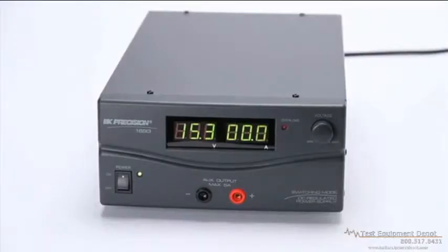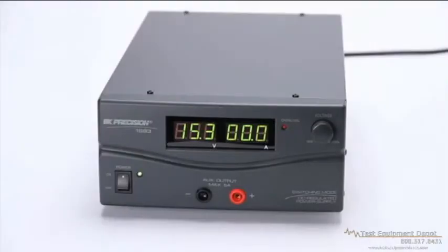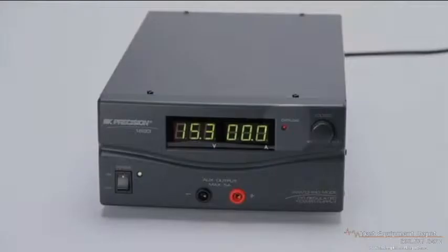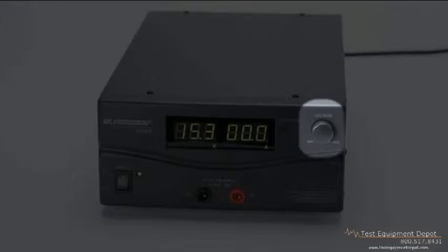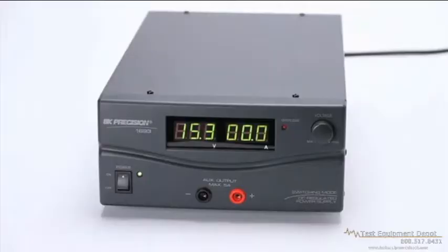The front panels of these instruments have a meter resolution of three digits for both voltage and current, an overload protection LED, a voltage control knob, a 5 amp max auxiliary output terminal where the output voltage will track the main output, and the power switch.